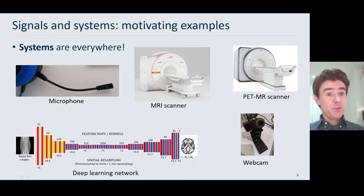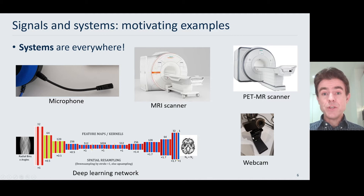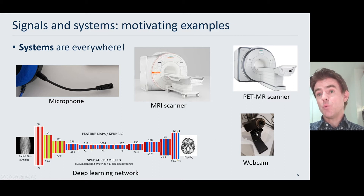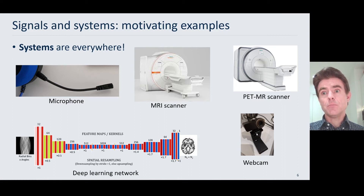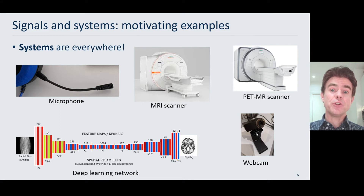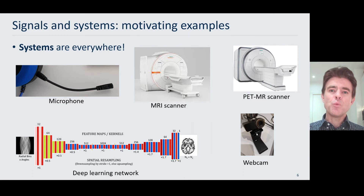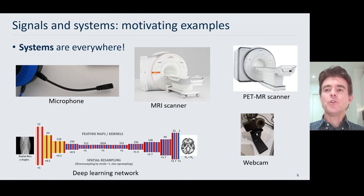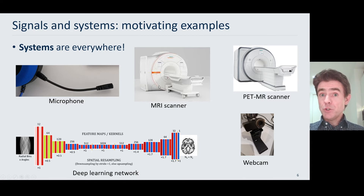It could be as simple as a microphone, or maybe going from 1D now to 2D signals, we could have a webcam where we're now obtaining not just a 2D signal, but also a time-varying 2D signal. So a webcam, for example, would therefore be an example of a system.